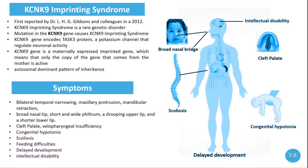The KCNK9 gene encodes a potassium channel involved in regulating neuronal excitability and other cellular processes. The disorder is associated with genetic imprinting, where the expression of the KCNK9 gene is influenced by the parent of origin. The KCNK9 gene disorder is rare and its exact prevalence is not well defined due to the rarity of the condition.